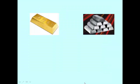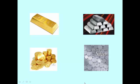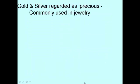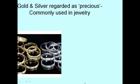Gold and silver are also transition metals. Gold and silver are commonly used in jewelry for their luster and shine.